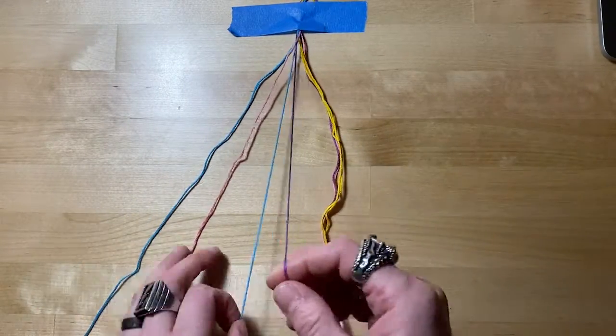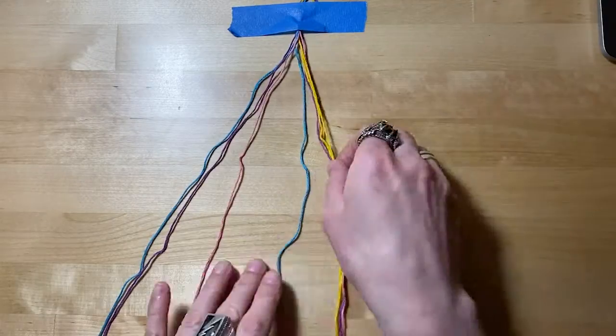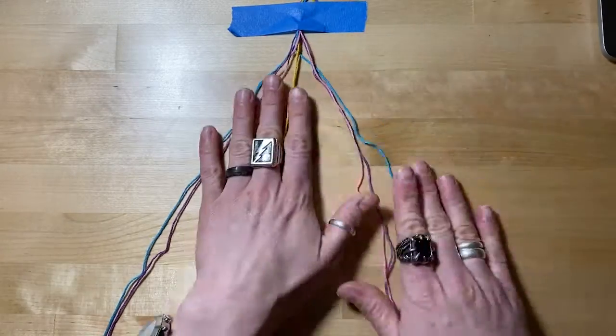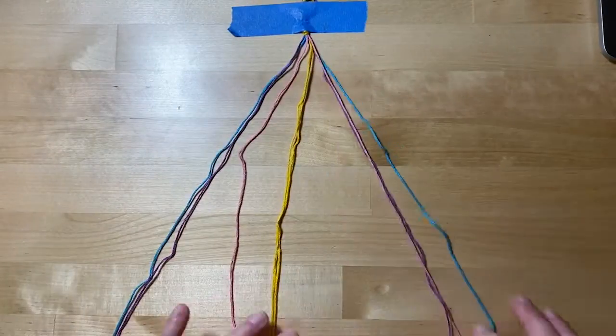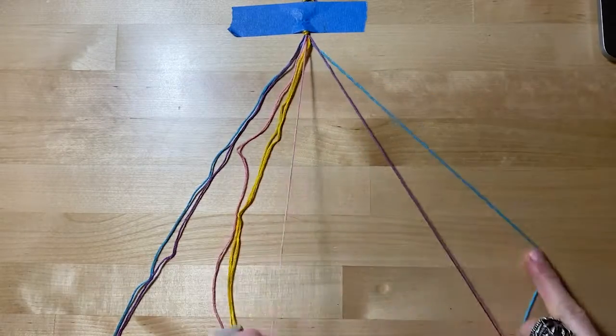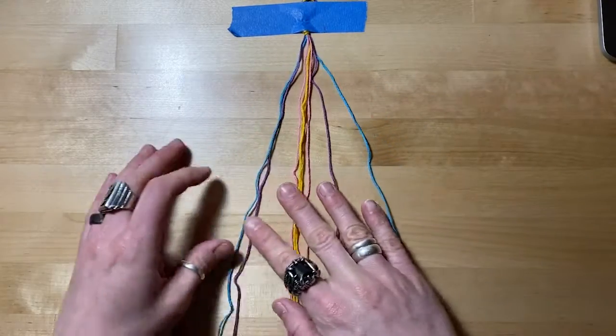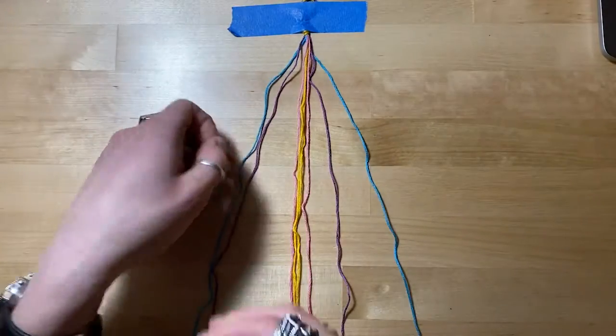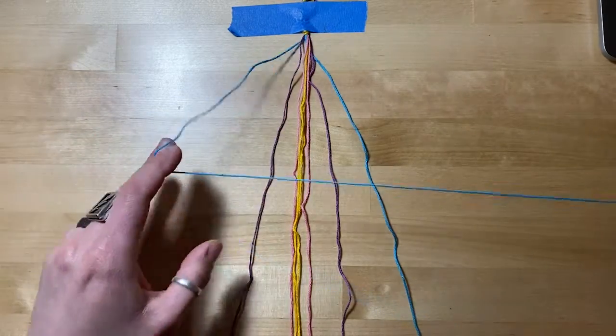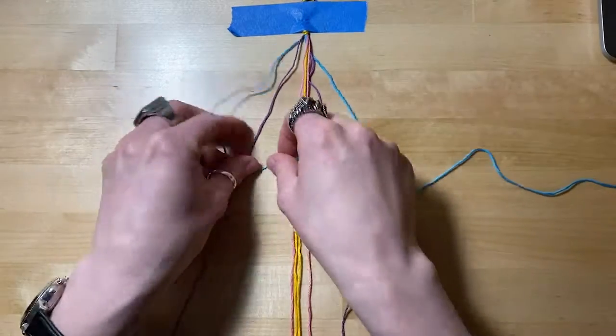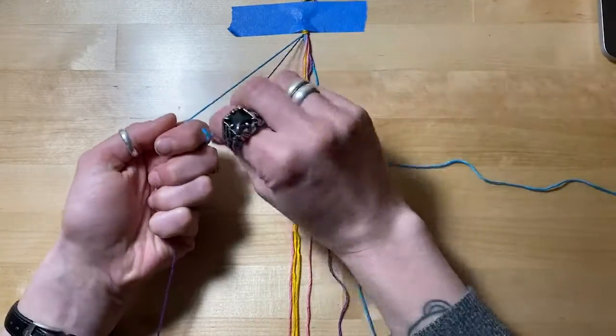For the candy stripe, we are going to arrange all of our strings fanned out in the order that we want the stripes to go. This can be any order you choose. Then we're going to do the same sort of four knot but just around one string at a time and twice on each one.